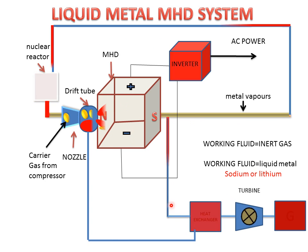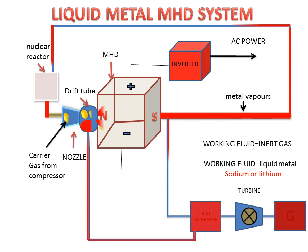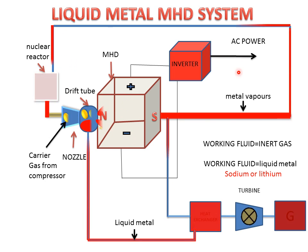The heat exchanger is connected to the mixing tube. When heat exchange takes place, the metal vapor converts into the liquid state, and this liquid metal further goes to the drift tube for mixing with the carrier gas. This process is repeated again and again, and electricity is generated. Electricity is generated by two ways: the inverter and the steam cycle. This is the working of the liquid metal MHD system.